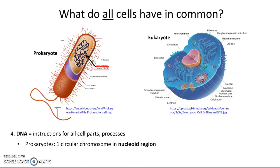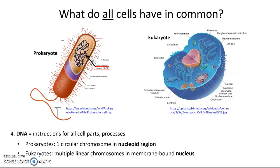In the eukaryote, it's a little bit different. Rather than circular, the chromosomes are organized in a linear fashion — individual strands — and rather than one, there are many. So we have multiple linear chromosomes, and they're inside a membrane — inside the nucleus. You, for example, have 46 individual linear chromosomes inside the nucleus of all of your cells. So the DNA is arranged differently in the two types of cells.